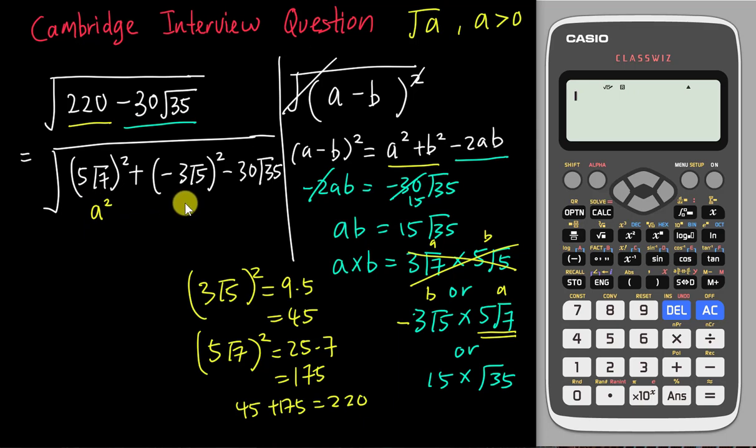You should be able to see this is a² and this is -b². So I know this should be √((5√7 - 3√5)²). Square and square root cancel out, then this should be my final answer.